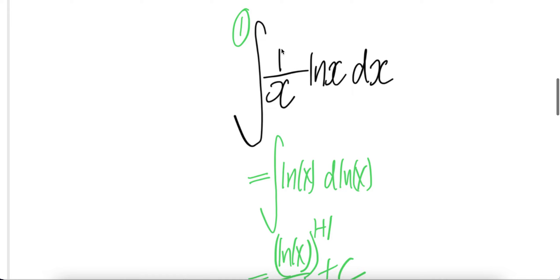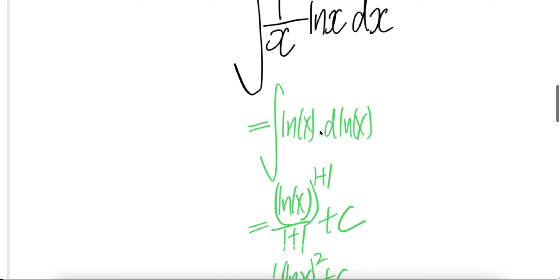Now, let us push this 1 over x into dx. The derivative of ln x is 1 over x dx. Now we have a familiar form: integral y dy is y to the 1 plus 1 over 1 plus 1, plus c.